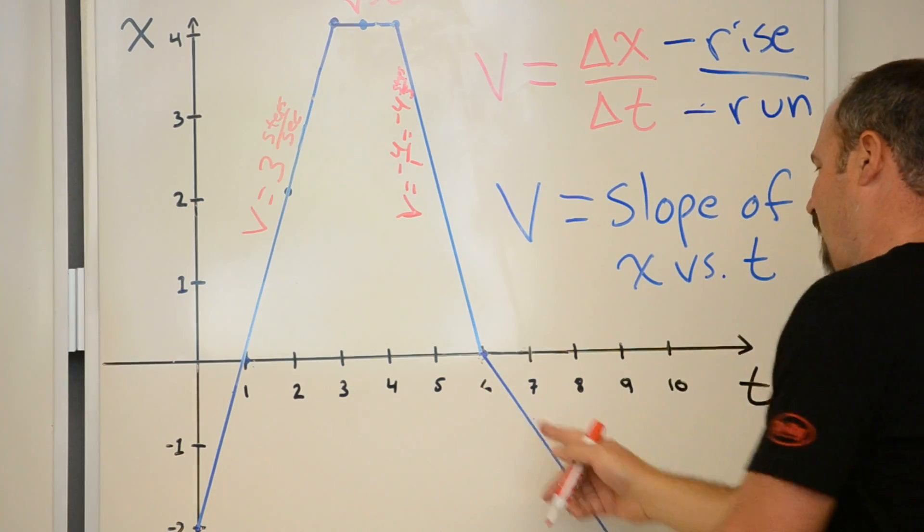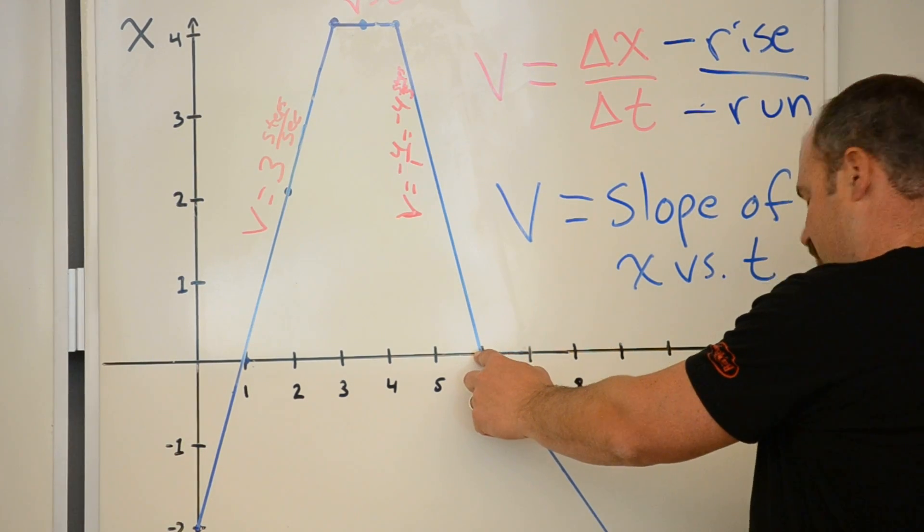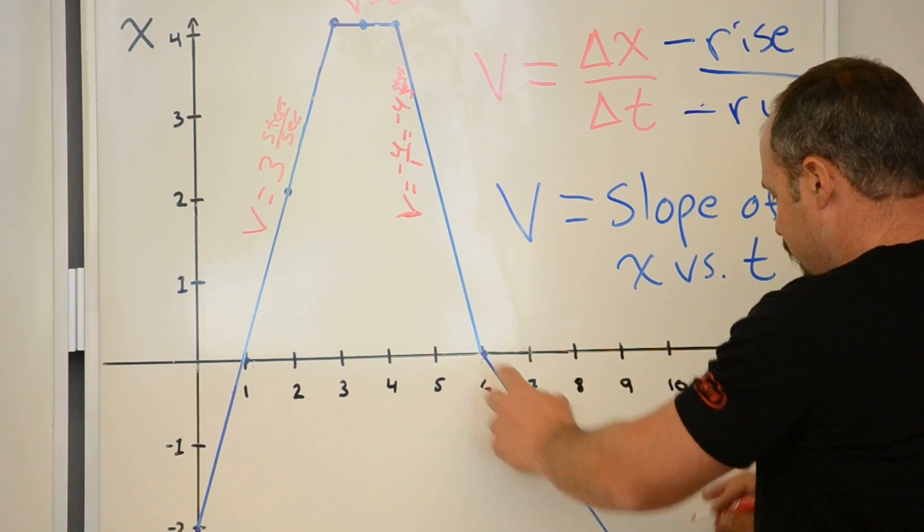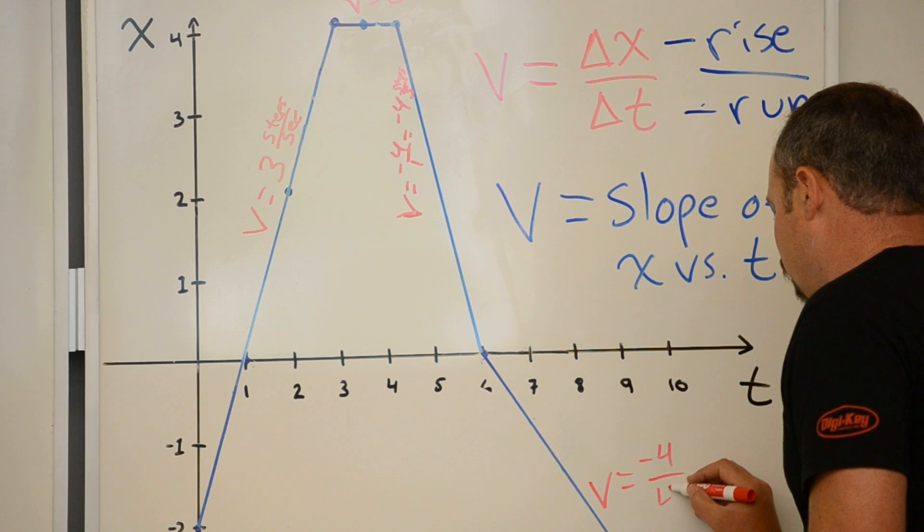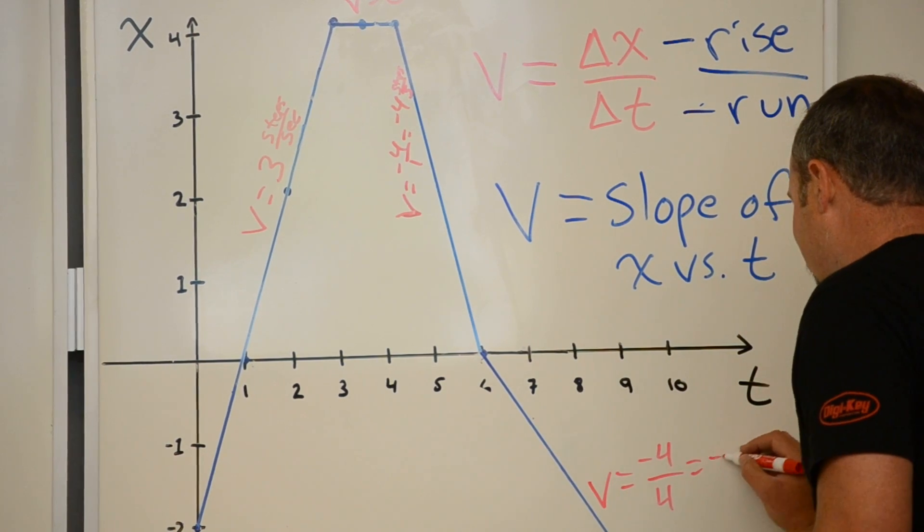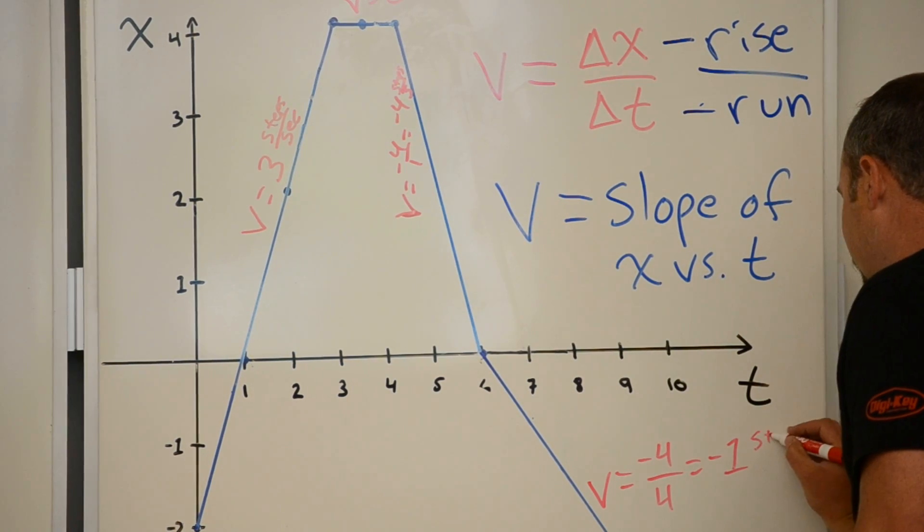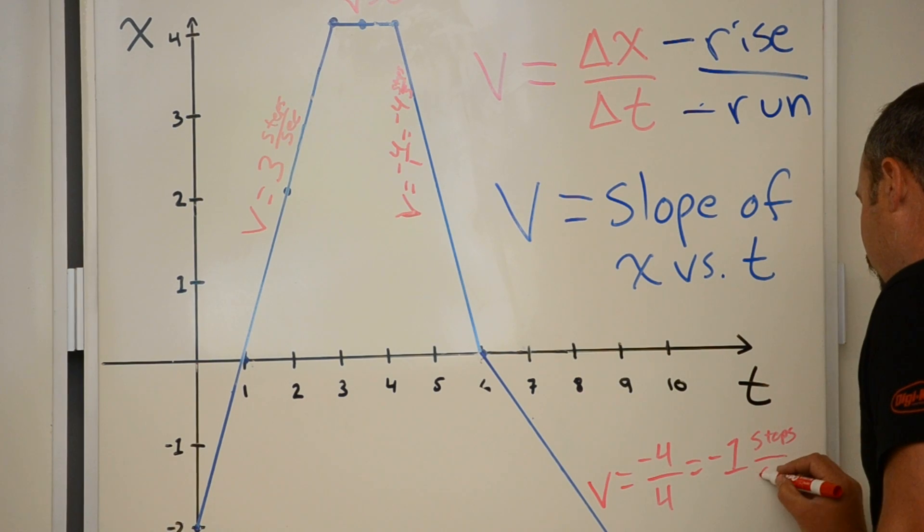And then, finally, at the end, I went down negative 4 in 1, 2, 3, 4 seconds. So, my velocity is negative 4 steps over 4 seconds. And that's simply negative 1 steps per second.